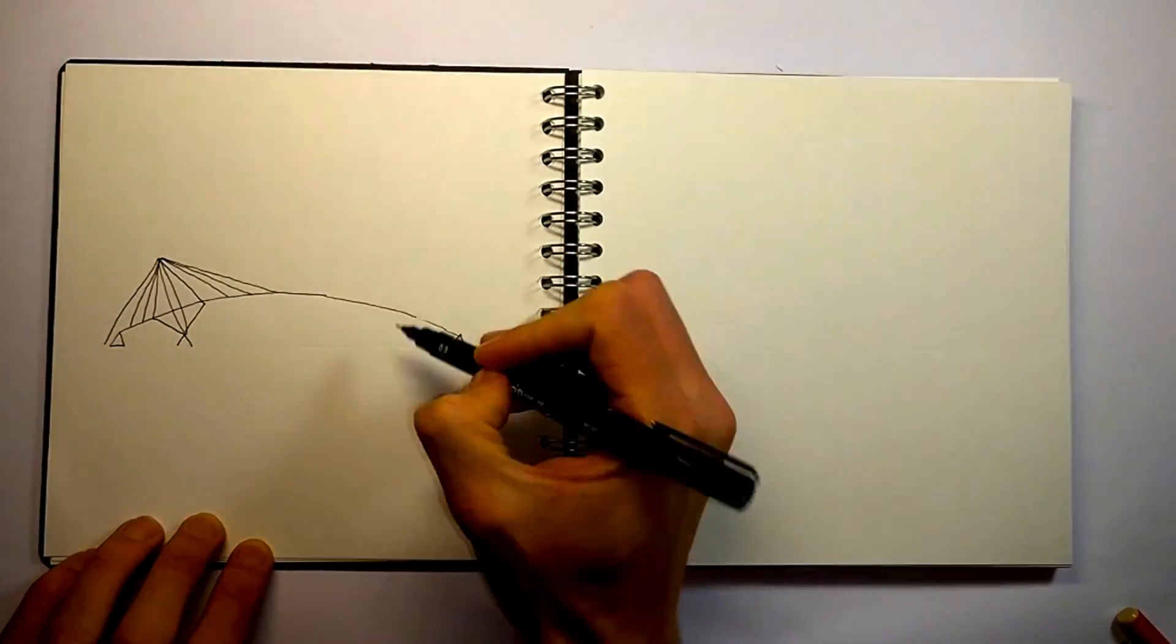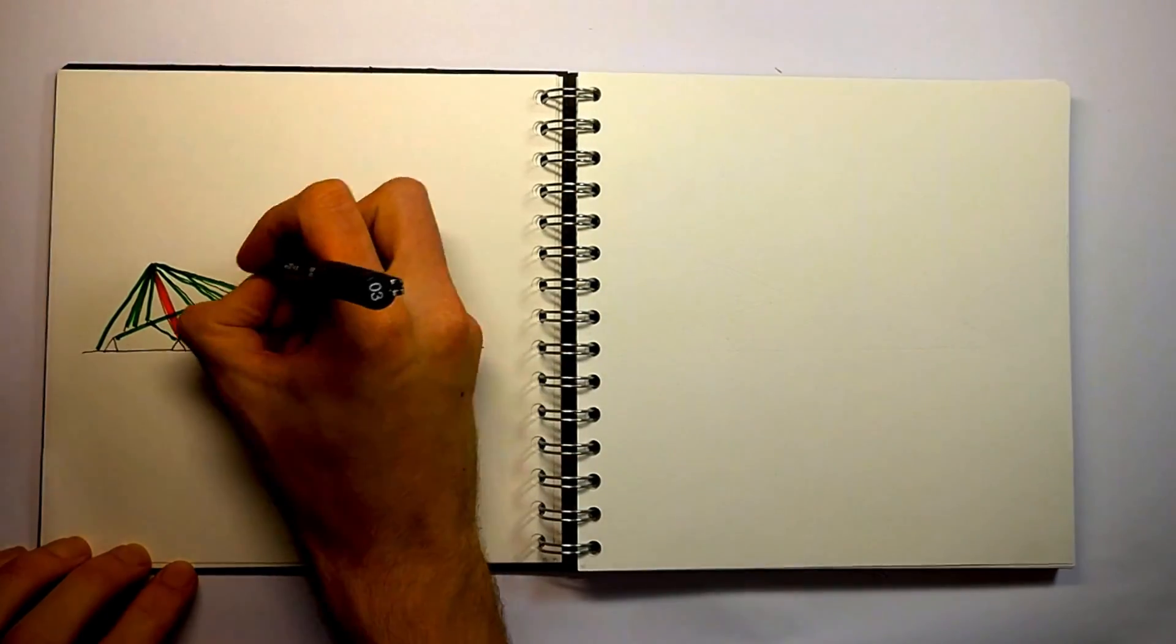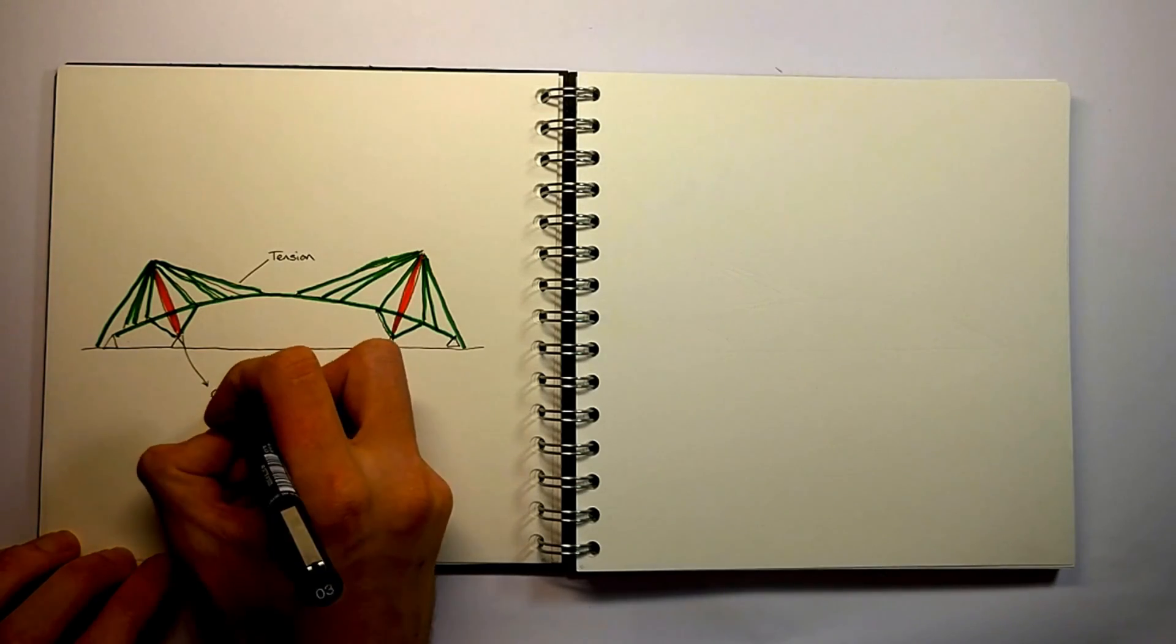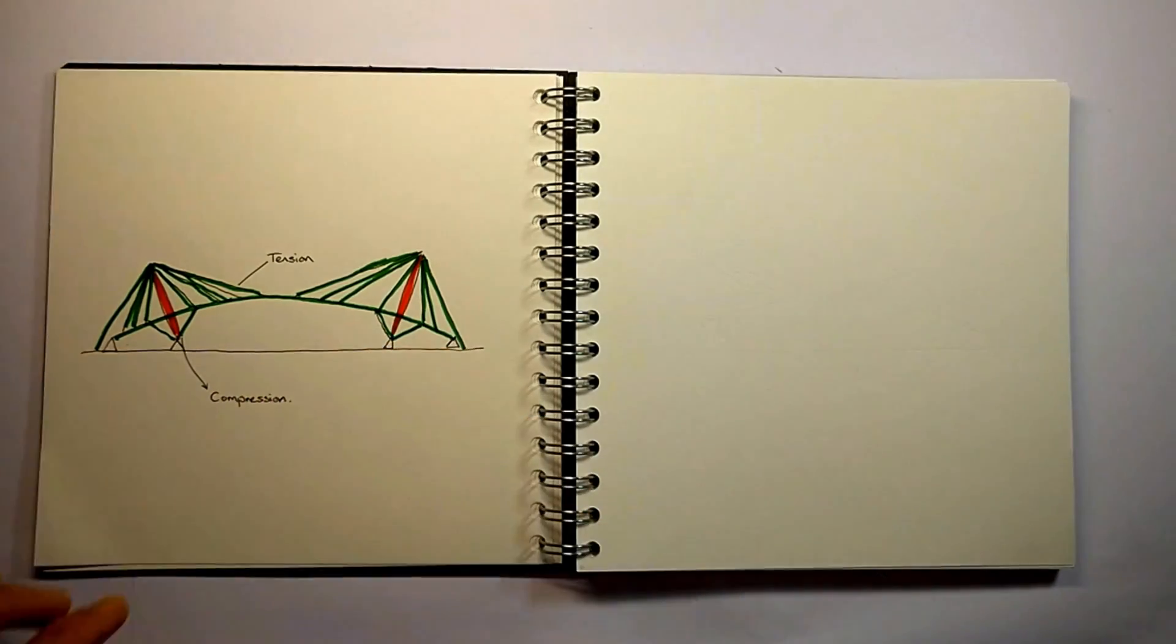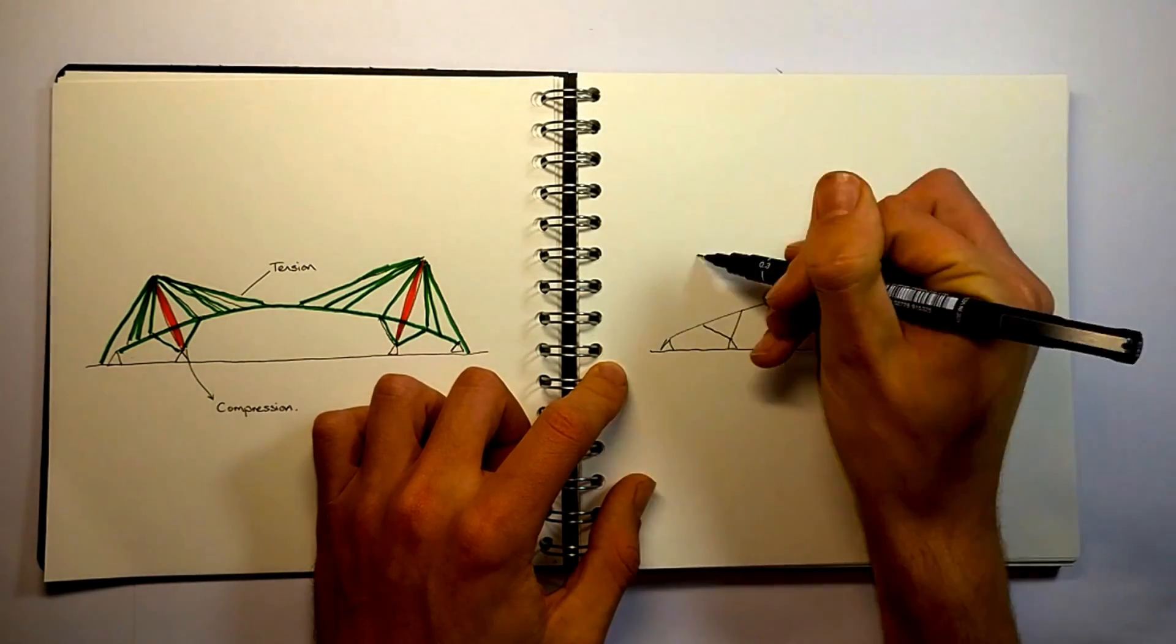The dome is a tensile structure where the majority of members are in pure tension with the isolated masts in compression. By removing bending, the structure is more efficient. Creating large structures is easier with tension members as they retain strengths no matter how long they are.